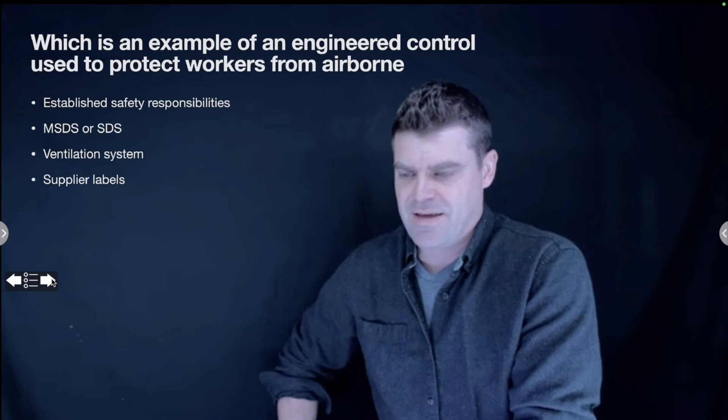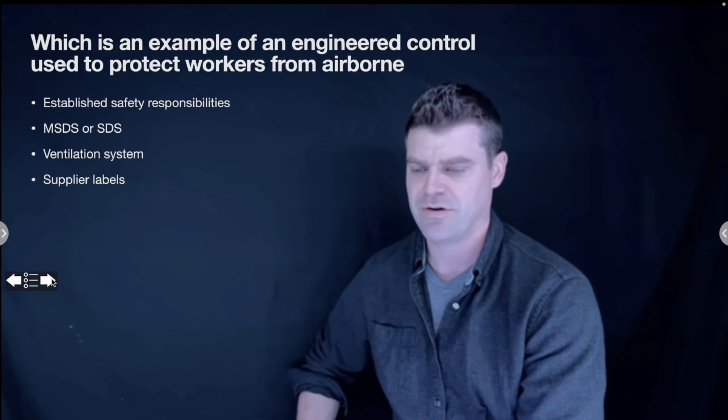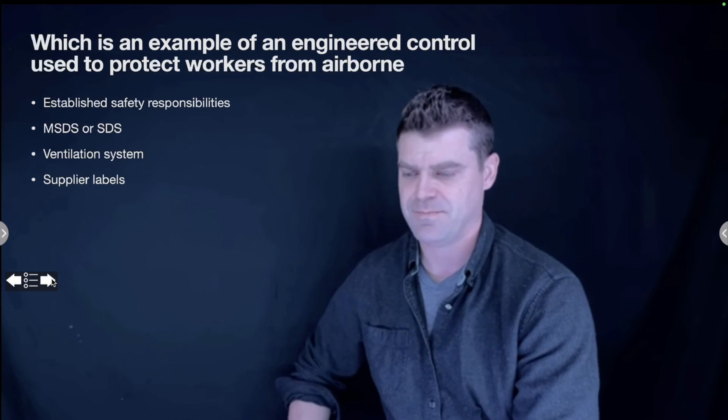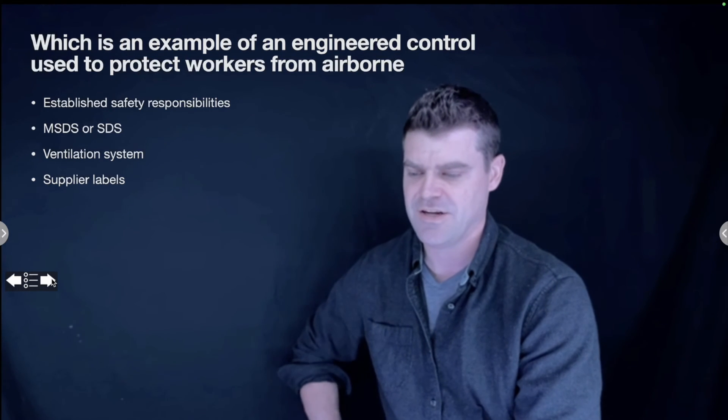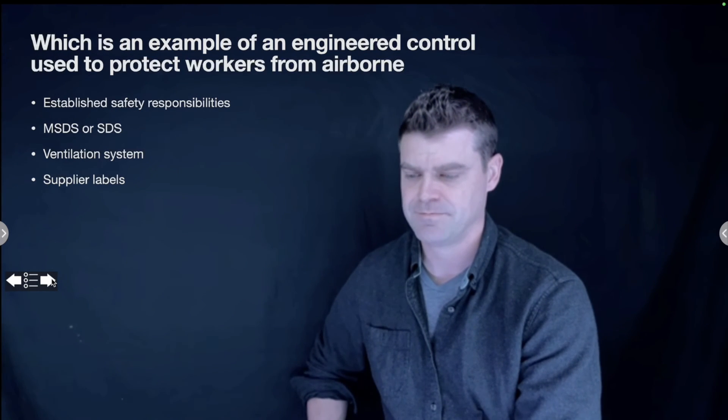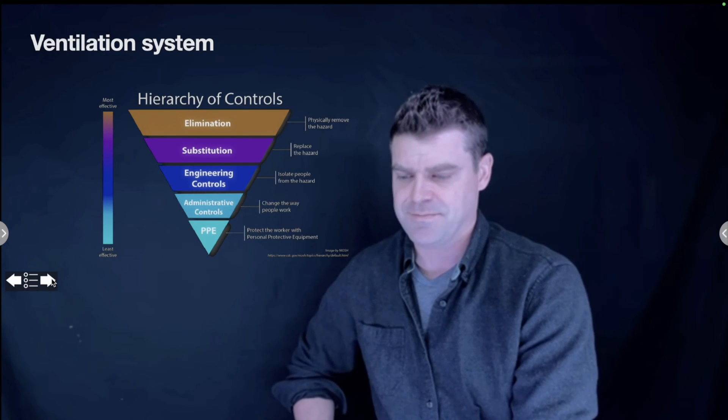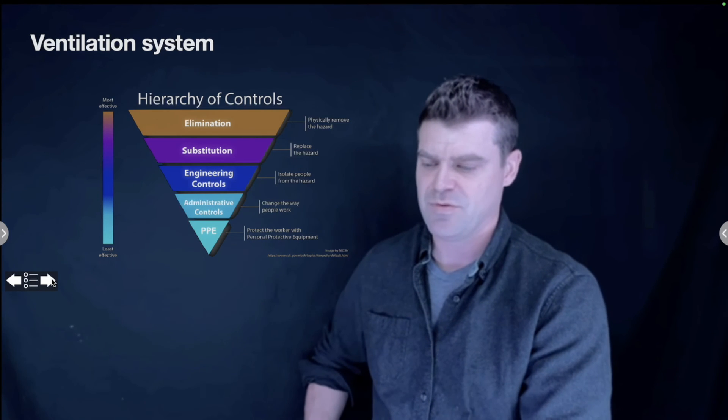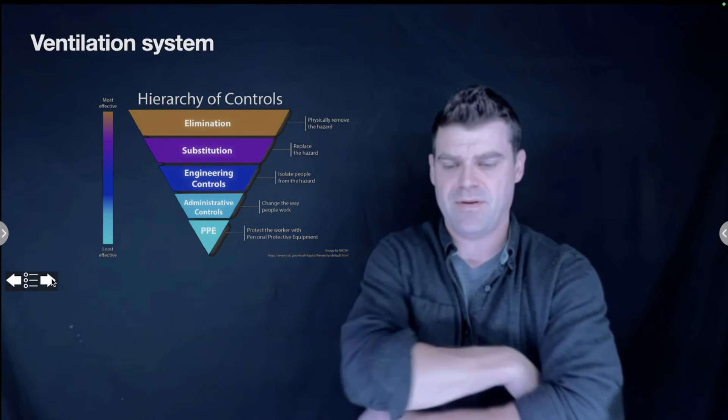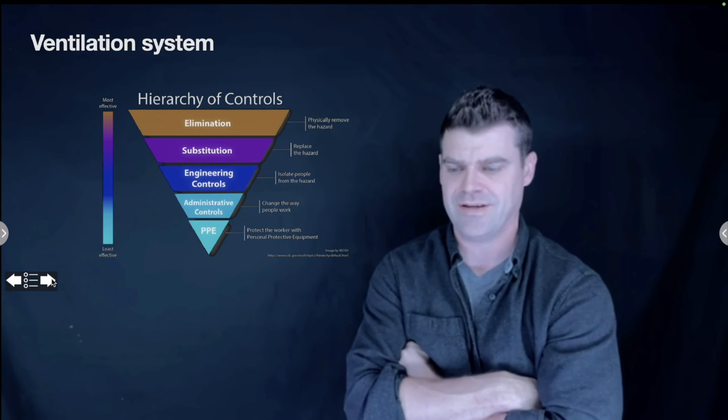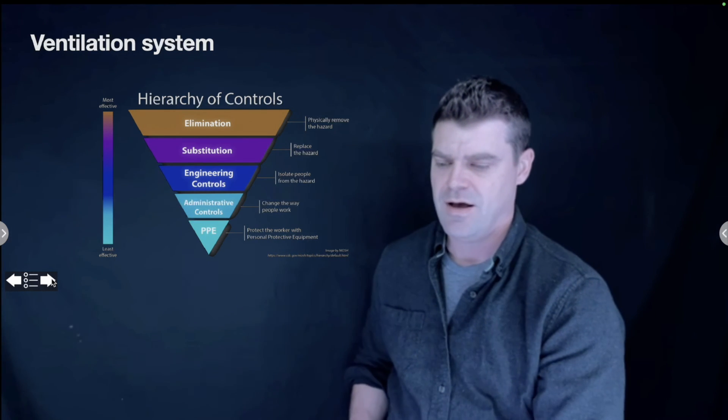Which is an example of an engineered control used to protect workers from airborne hazards? Established safety responsibilities, MSDS or SDS, ventilation system, or supplier labels? The answer is a ventilation system. A ventilation system would be an example of an engineered control. It's a way of, if we have something that is hazardous up and above a certain amount of parts per million, you can put in some type of ventilation and that ventilation is going to remove or reduce the hazard to a safe level.